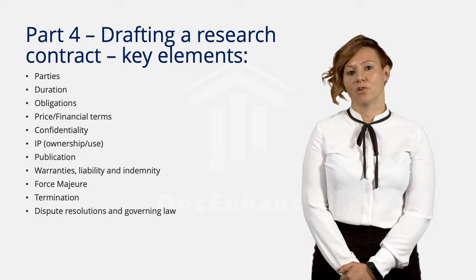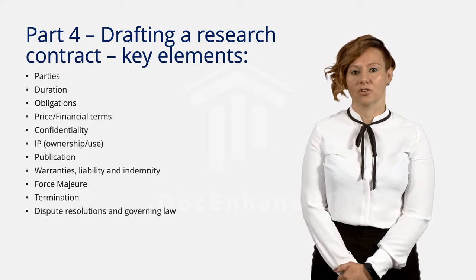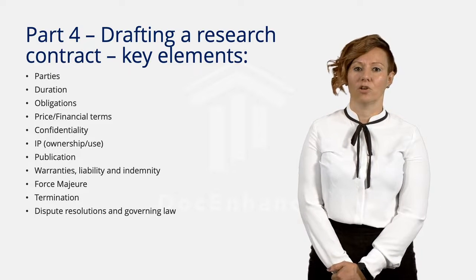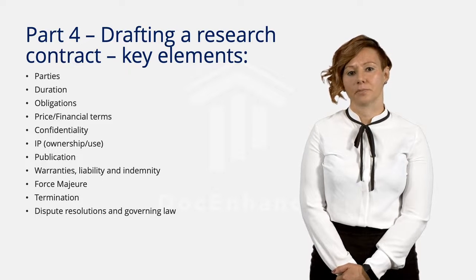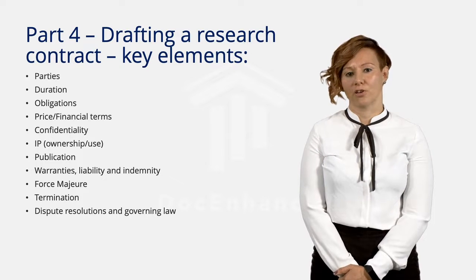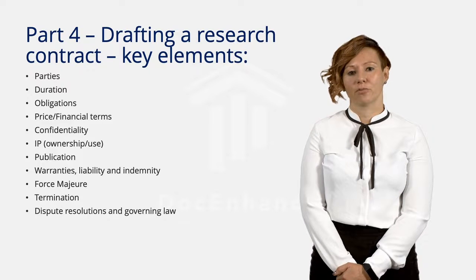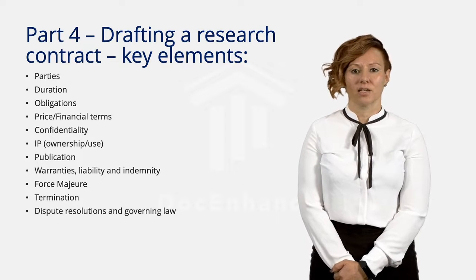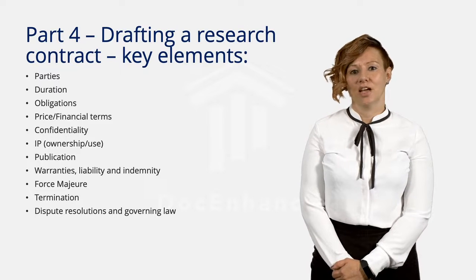By deciding upon a governing law clause, the parties know what law is to be applied to determine questions regarding the rights and obligations under the contract. Where the parties fail to agree on the governing law clause, there are complex rules to determine what the governing law of the contract should be, and the outcome can vary depending on the jurisdiction deciding the case. If you cannot agree whose national law should govern the contract, a solution could be to choose a neutral governing law of a third country. It is also important to include a dispute resolution clause, which sets out the process by which the parties intend to resolve any disputes arising out of their contract. A dispute can be solved by various methods like litigation in court, arbitration, mediation, and negotiation.